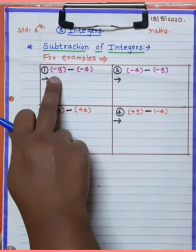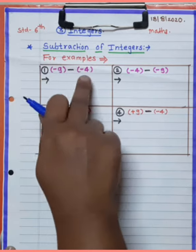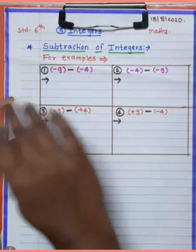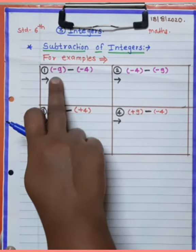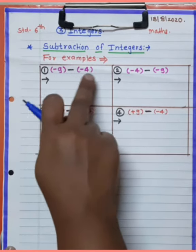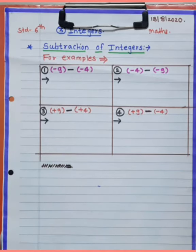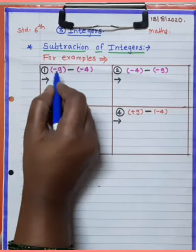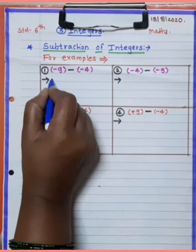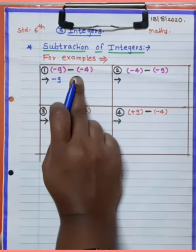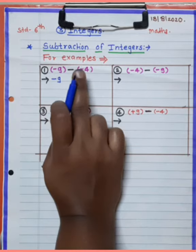If you have two negative integers, you need to apply the rule. Listen carefully: minus 9 — write it as it is. Minus minus becomes plus. That is the rule: minus minus equals plus.